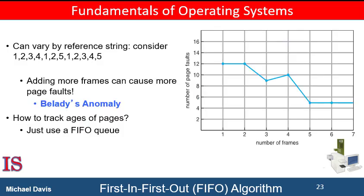To demonstrate the problems possible with the first-in-first-out page replacement algorithm, consider the following reference string: 1, 2, 3, 4, 1, 2, 5, 1, 2, 3, 4, 5. The figure on the right shows the curve of page faults for this reference string versus the number of available frames. Notice that the number of faults for four frames is ten, which is greater than the number of faults for three frames — nine. This unexpected result is known as Belady's anomaly. For some page replacement algorithms, the page fault rate may increase as the number of allocated frames increases. We would expect that giving more memory to a process would improve its performance, but in some early research, investigators noticed this assumption was not always true. Belady's anomaly was discovered as a result.